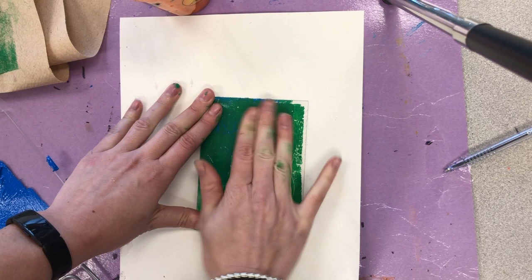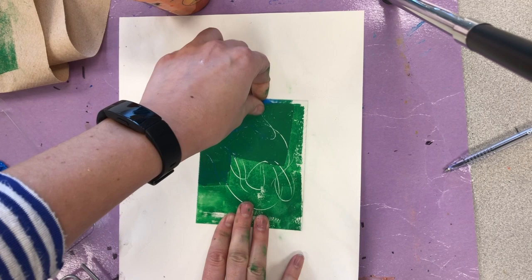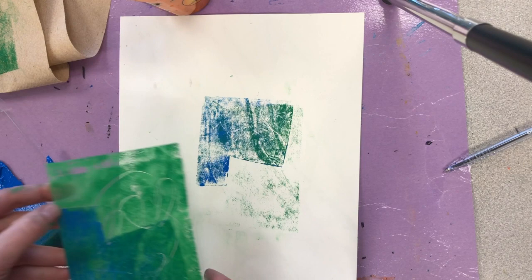It's a monoprint which means you can only create one. So this print can only be created once, you can't make another print out of it. And then once you've pressed down and count to 30, you're going to pull it up and your monoprint will be on there.